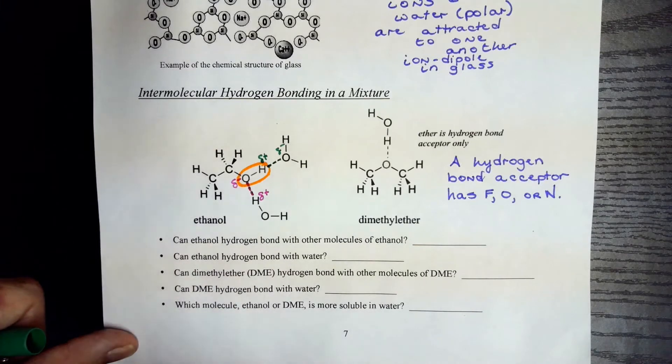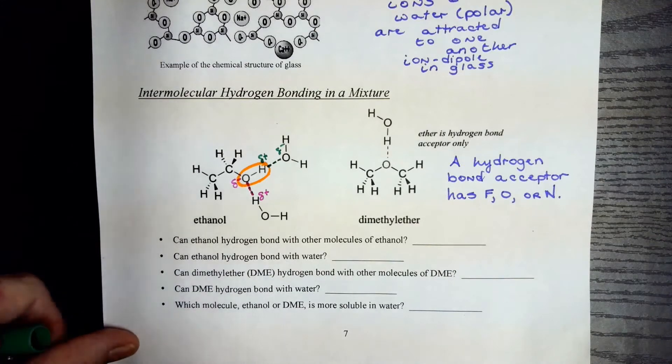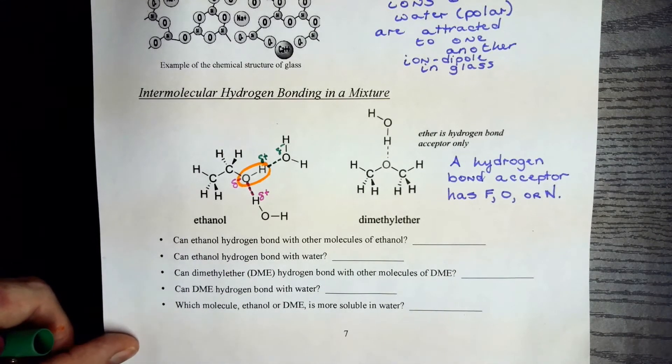So big takeaway here: when a molecule has H directly bonded to F, O, or N, it can act as a hydrogen acceptor or a hydrogen donor.